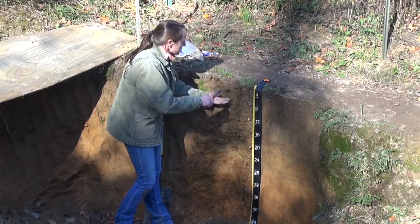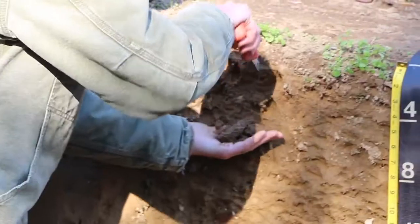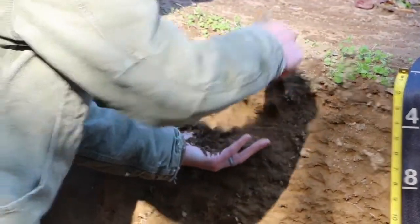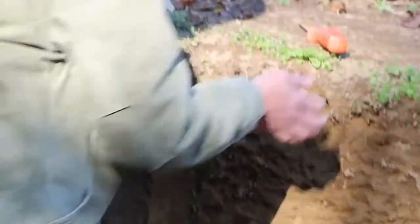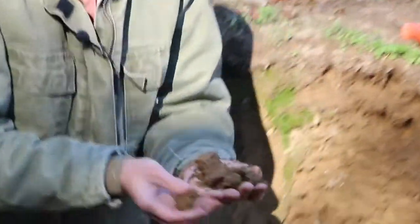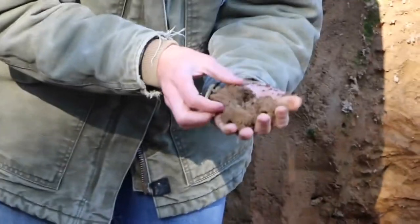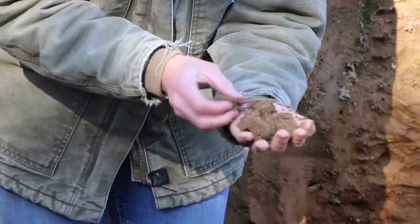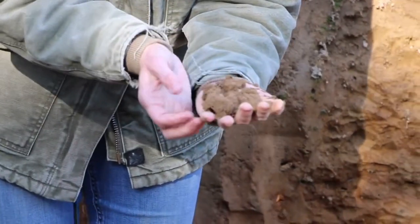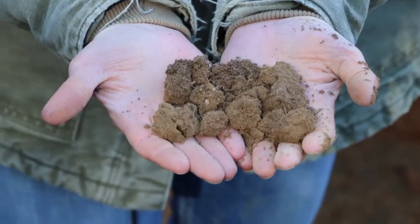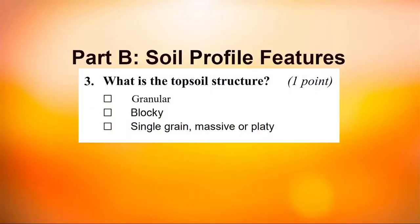To look at structure, break out some pieces of the soil and see how it breaks apart in your hands. As I break this apart, they all form into little blocks. So this is an example of blocky structure.